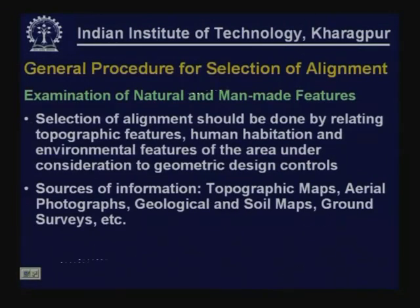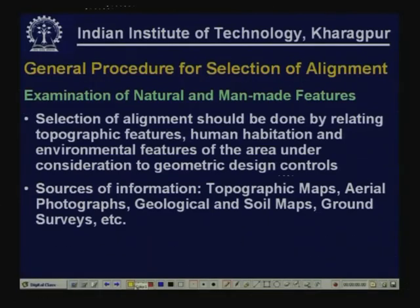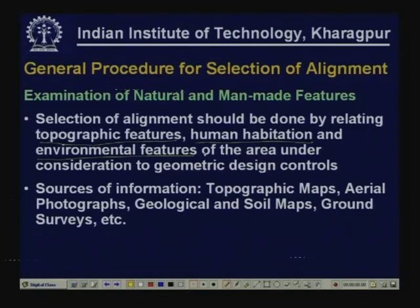Let us look at the general procedure for selection of alignment. The very first thing we should do is examine the natural and manmade features. Selection of alignment should be done by relating topographical features, human habitations, and environmental features of the area under consideration to geometric design controls. So we have geometric design controls on one hand, and on the other side we have topographic features, human habitation, and environmental features — we have to relate them.